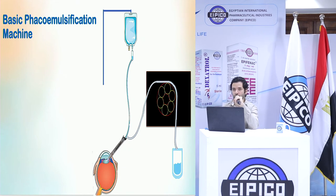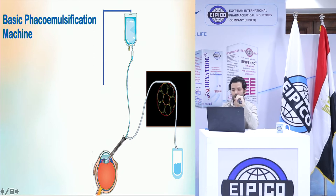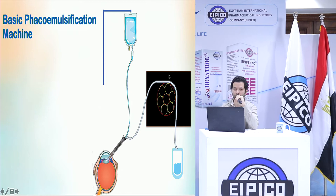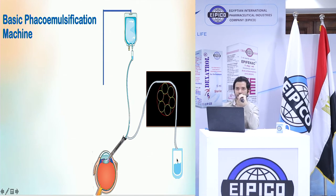Regarding the basic structure of the phacodynamic machine: we have an irrigating bag held upon a handle, connected to the IV line that provides the phaco probe with the source of inflow inside the eye, giving fluid into the eye. On the other hand, there is an outflow line that brings fluid from the eye through the phacoemulsification machine. In the peristaltic pump mode, there are rollers responsible for milking fluid from the outflow line into a collecting bag. So the basic principle is two fluid currents: the inflow from the bag and the outflow.